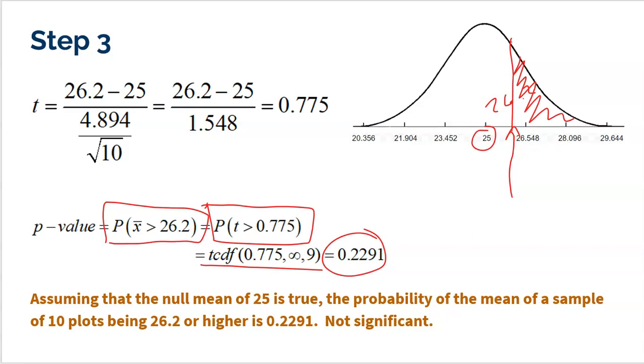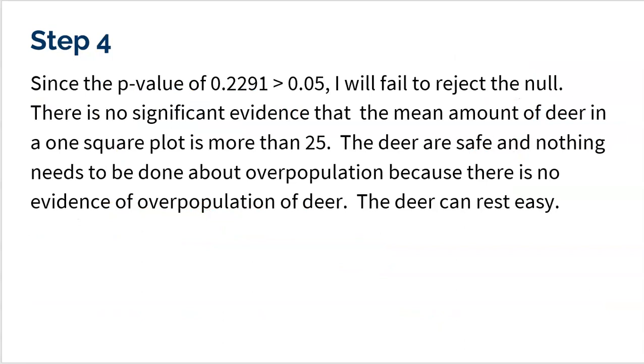So no need to be concerned here. Here's my nice conclusion. Since my p-value of 0.2291 is greater than my alpha of 0.05, I will fail to reject the null. It's just not significant. There is no significant evidence that the mean amount of deer in one square mile plot is more than 25. So there is no deer overpopulation. There is no reason for the wildlife to take any kind of precautions to try to reduce the amount of deer, which usually means open hunting.